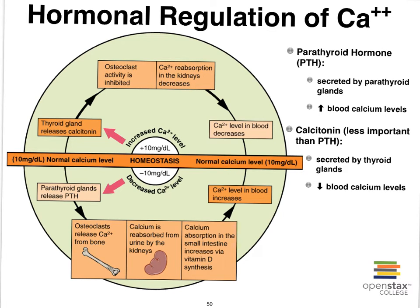The two hormones that play a very important role in ensuring that calcium levels in the blood maintain homeostatic levels are parathyroid hormone — often abbreviated PTH, secreted by your parathyroid gland — and calcitonin, secreted by the thyroid gland. So your thyroid gland secretes not only thyroid hormone but also calcitonin. Of these two, parathyroid hormone plays the most important role. Calcitonin plays less of a role, particularly in adults — it is more important in bone remodeling in children.